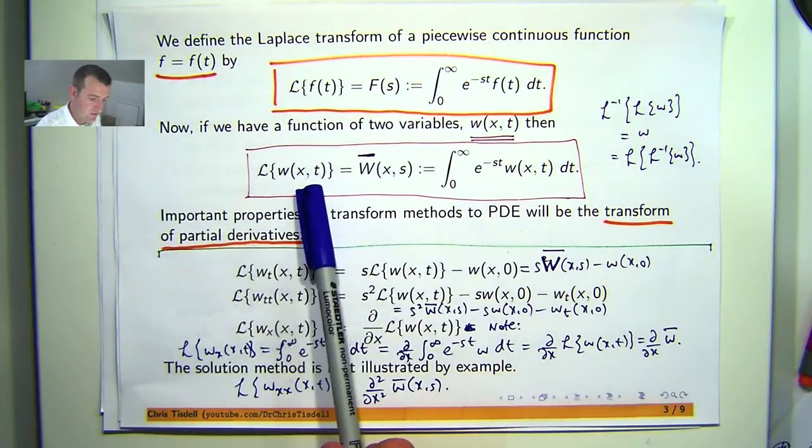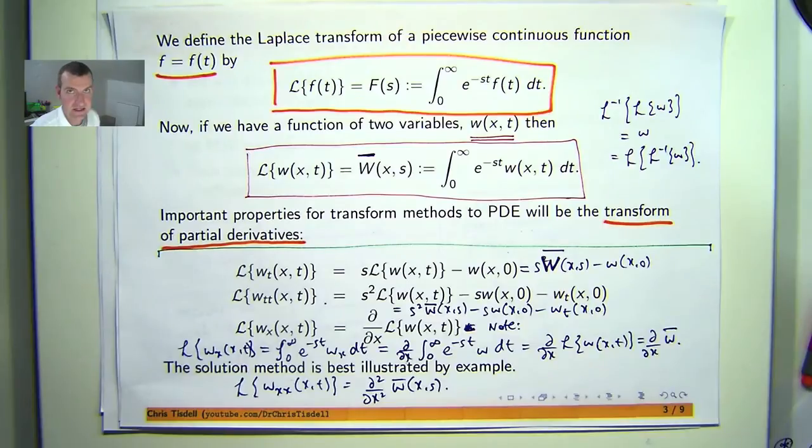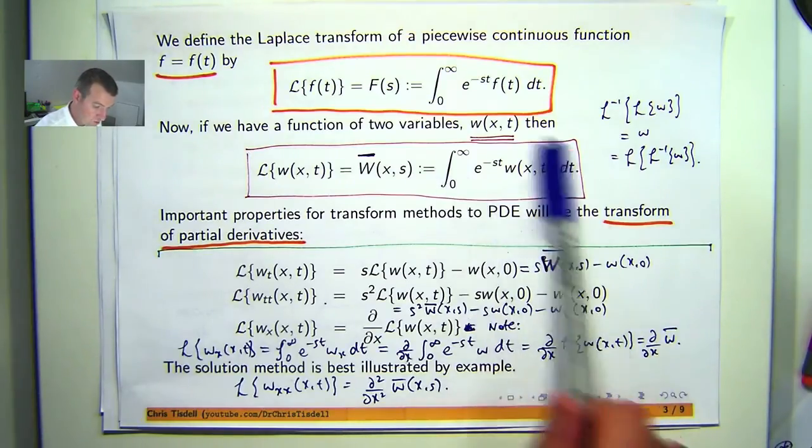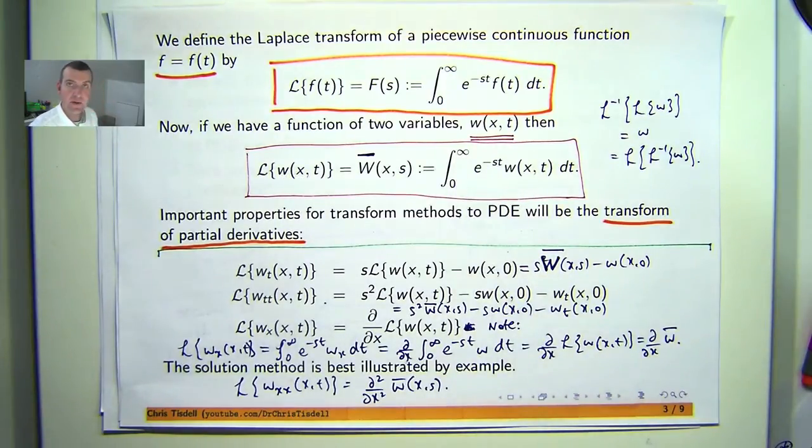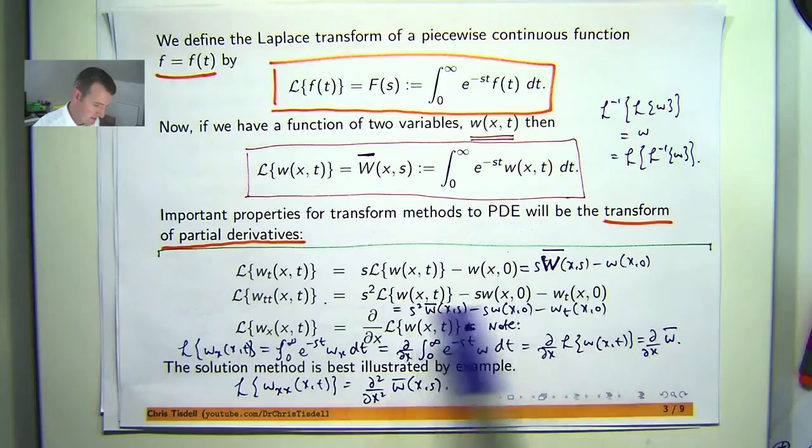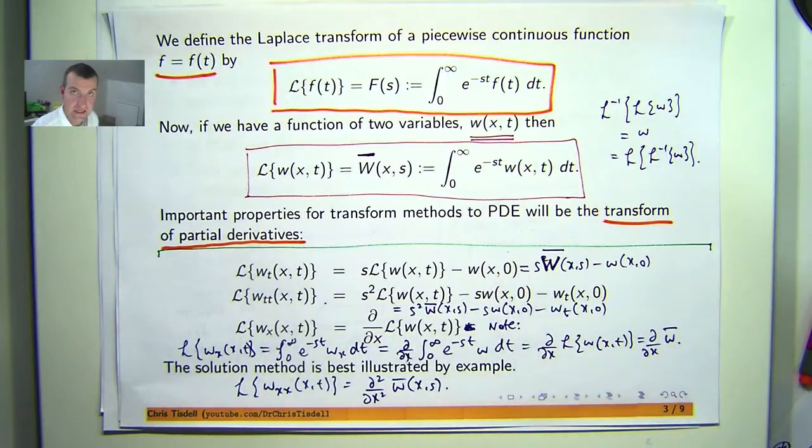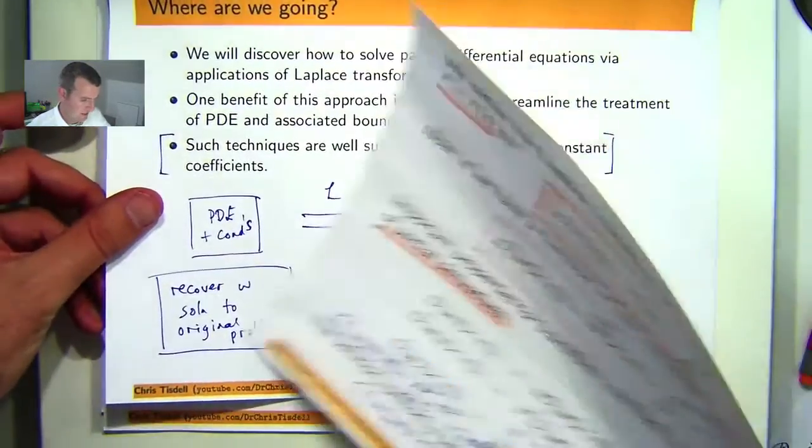The Laplace transform of a function of two variables with respect to t, I'm going to denote by a capital letter with a bar over it. It's an integral transform - you take this, multiply it through by an exponential, and you form an improper integral. Now one thing that's very important for Laplace transform techniques and differential equations are these transforms of derivatives, which you can prove using integration by parts and Leibniz rule for differentiating under the integral sign.